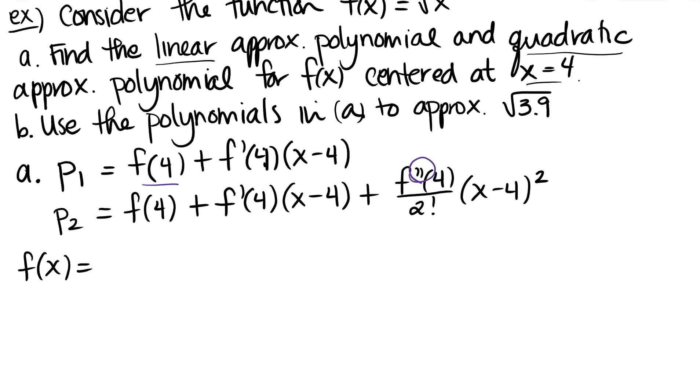So I know f of x is x to the 1 half. I'm going to rewrite it like that because I know I'm going to take the derivative. f primed of x then is 1 half x to the negative 1 half. And then because I know I want a second order Taylor polynomial, I'll go ahead and take the second derivative, which is negative 1 fourth x to the negative 3 halves.